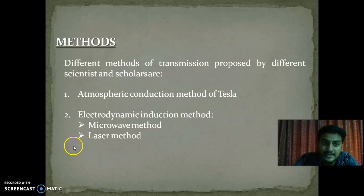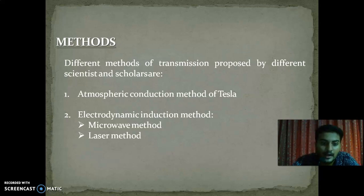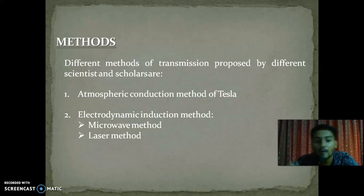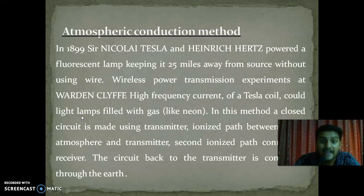Let's now check the methods of wireless transmission of power. Different methods of transmission proposed by different scientists and scholars are: first, the atmospheric conduction method of Tesla; second, the electrodynamic induction method, which has two subtypes — microwave method and laser method. Let's first check the atmospheric conduction method. In 1899, Sir Nikola Tesla and Heinrich Hertz powered a fluorescent lamp keeping it 25 miles away from the source, without using wire.